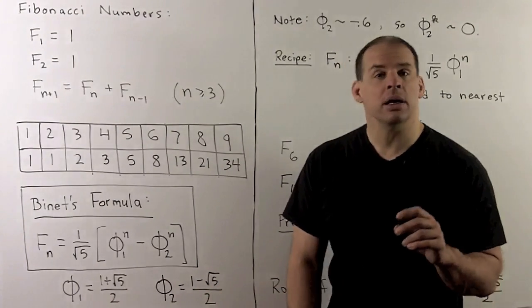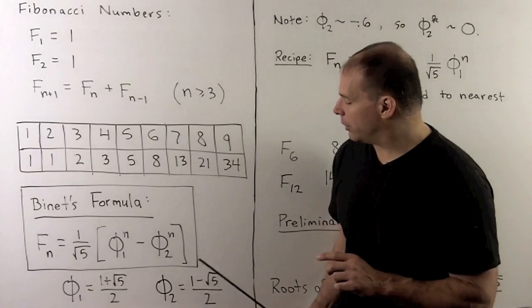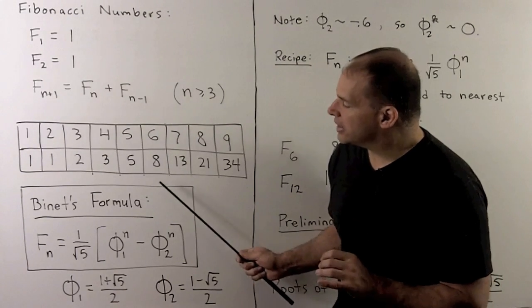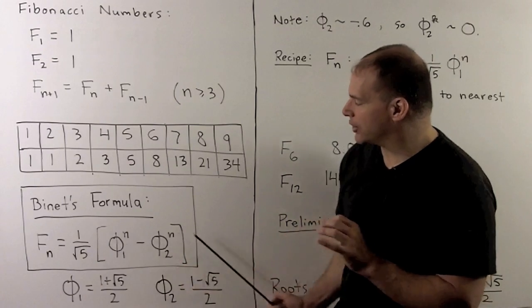Phi 1 is equal to 1 plus square root of 5 over 2, better known as the golden mean. Phi 2 is equal to 1 minus square root of 5 over 2. And you'll note, this seems like a pretty unlikely formula. We're expecting to get integers to come out of this always.